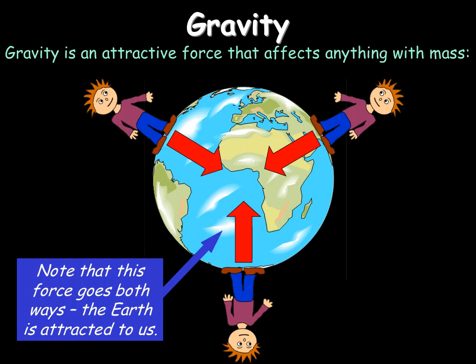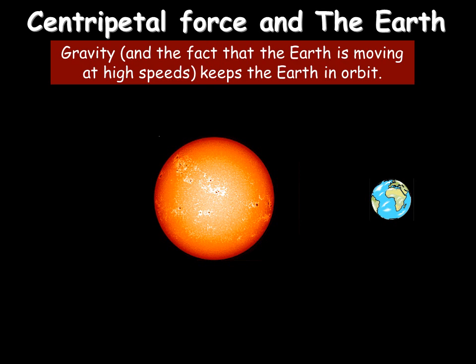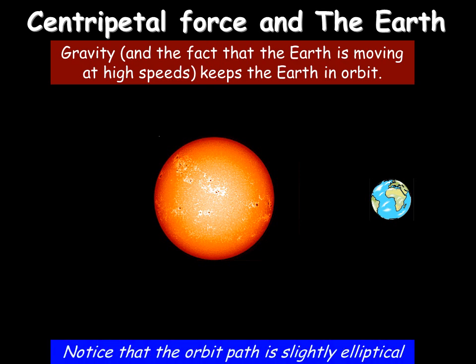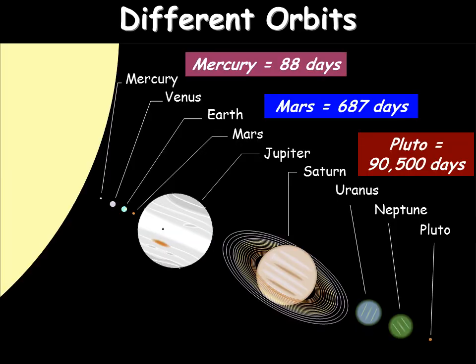If you apply centripetal force to gravity, gravity is the attractive force that affects everything in the universe. For example, the Earth going around the Sun — because the Earth is moving at quite a high speed but gravity pulls it towards the Sun, it doesn't get any closer to the Sun, it simply moves in a circular path. In fact, it's not quite a circular path; it is slightly elliptical, so the force will change slightly as it moves closer to the Sun, but the path is considered approximately circular.